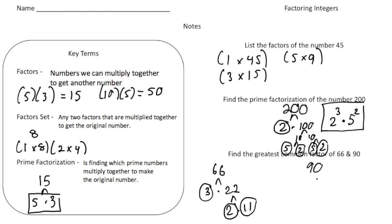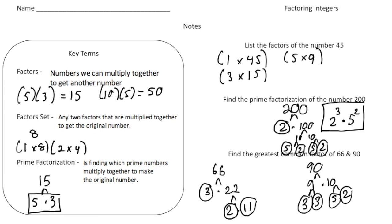Now let's do the same for 90. 90 can be 9 times 10. 10 can be 5 and 2, and both of those are prime. And 9 is 3 and 3, and that's prime and prime. So now we have both prime factorizations for 66 and 90.